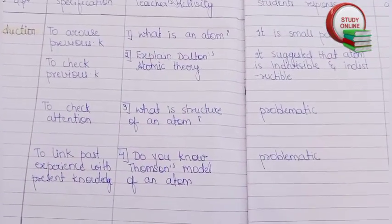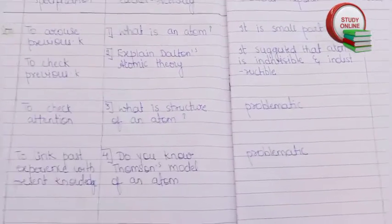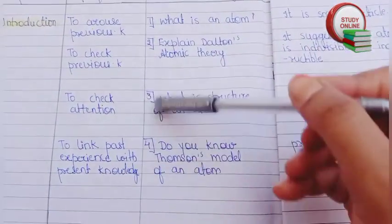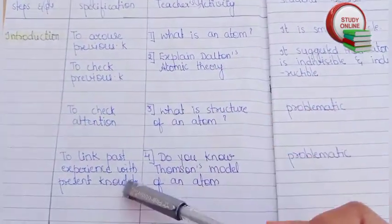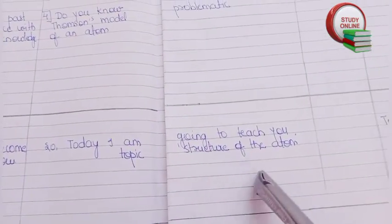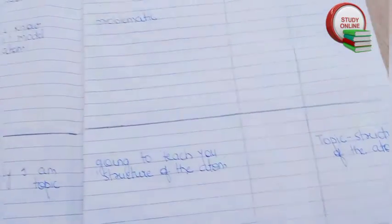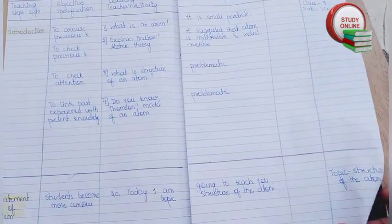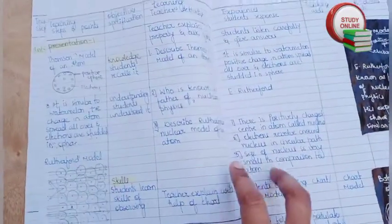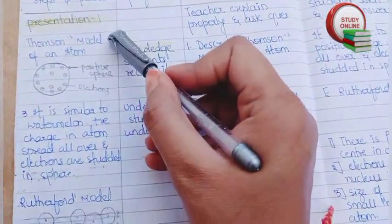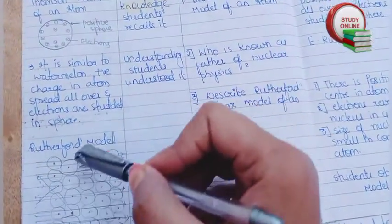Here you can see - oh wait, let me just - here you can see list of objectives and specifications. Here is the statement of aim: today I'm going to teach you the topic Structure of the Atom. This is the overall look. Now here you can see Thompson's model of an atom and here Rutherford's model.